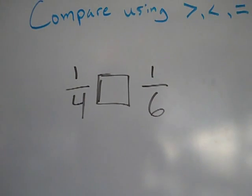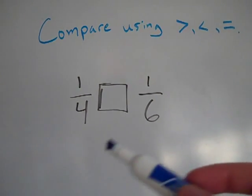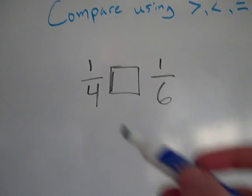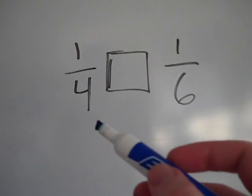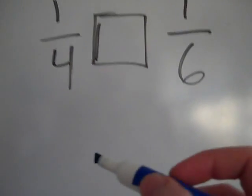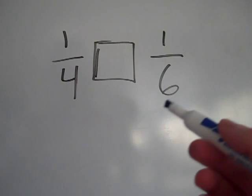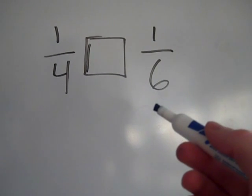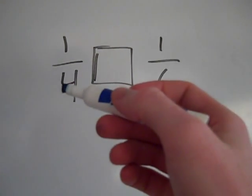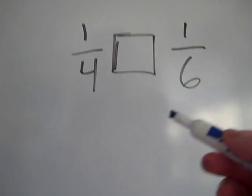I'm going to show you how to compare and order fractions using like or common denominators. First you need to look at your two denominators — I'm looking at four and six — and think about their multiples. I usually go for the bigger number first, think of its multiples, then figure out which of those multiples is also a multiple of four.